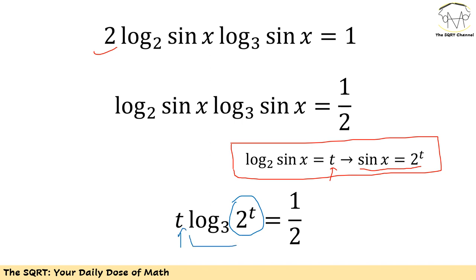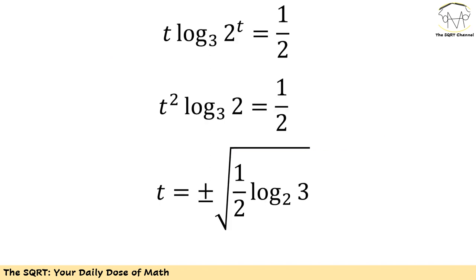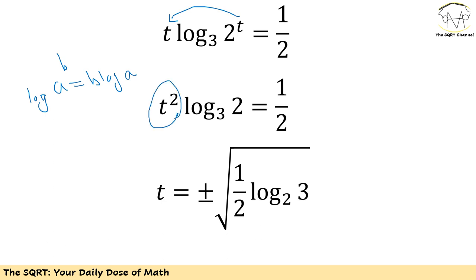Using the rule log of a to the power of b equals b times log of a, we replace log of 2 to the power of t in base 3 with t times log of 2 in base 3. Multiplying by the outer t gives t squared times log of 2 in base 3 equals 1 over 2. Dividing both sides by log of 2 in base 3, and using the identity 1 over log of 2 in base 3 equals log of 3 in base 2, we get t equals plus or minus the square root of one half times log of 3 in base 2.